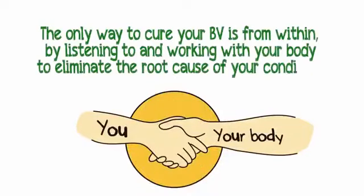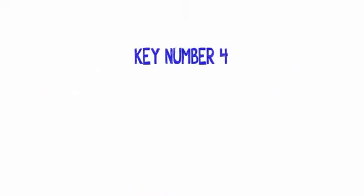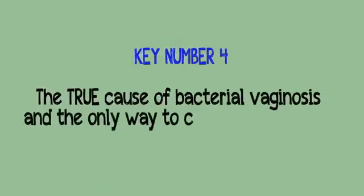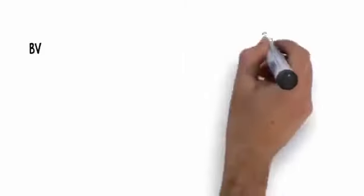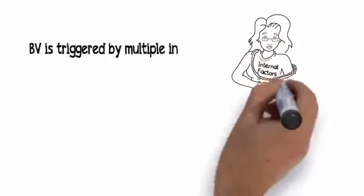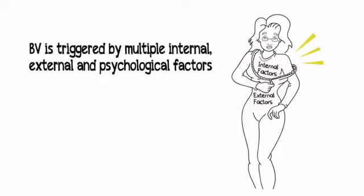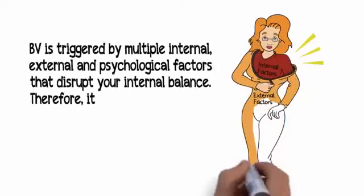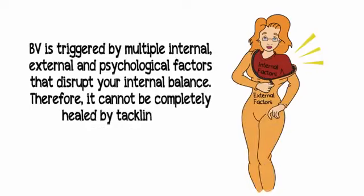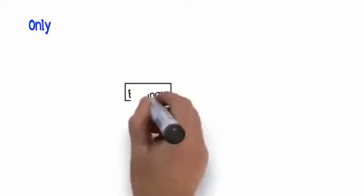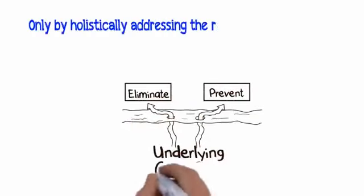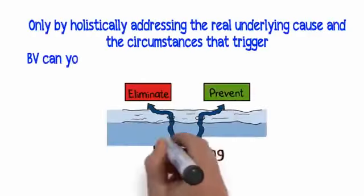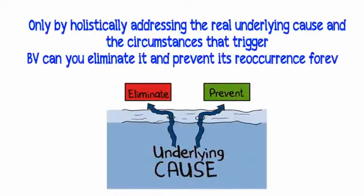The only way to cure your BV is from within, by listening to and working with your body to eliminate the root cause of your condition. Key number four: the true cause of bacterial vaginosis and the only way to cure it permanently. BV is triggered by multiple internal, external, and psychological factors that disrupt your internal balance. Therefore, it cannot be completely healed by tackling the external symptoms alone. Only by holistically addressing the real underlying cause can you eliminate and prevent its reoccurrence forever.